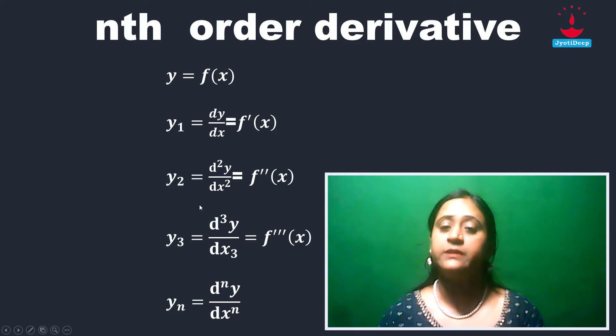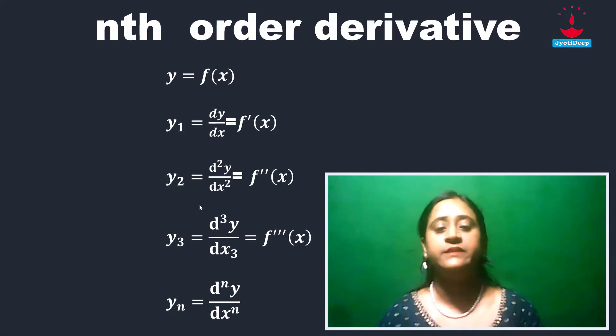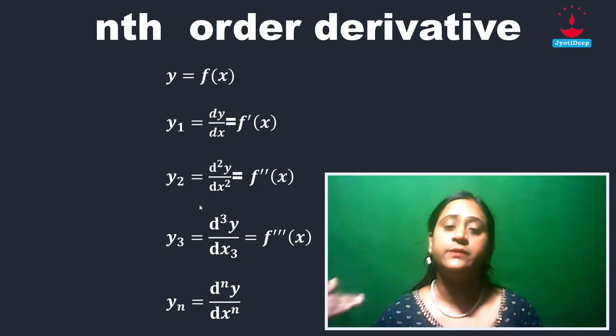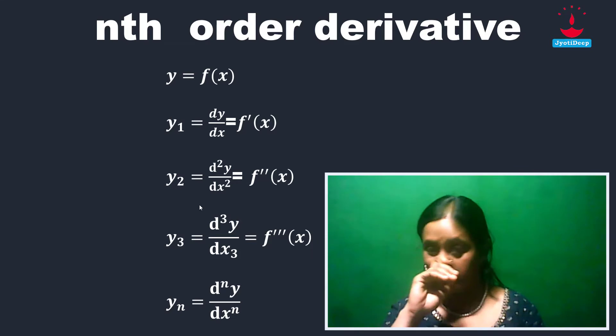Similarly, aamra y2 bier kuri? d2 y by dx2. y3 d3 y by dx cube. Dot dot dot. Jodhi nth order derivative hache yn, equal to dn to the power y by dx to the power n.